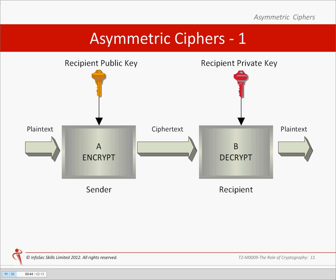The sender must possess the public key of the recipient. The recipient generates the private and public key pair and makes the public key available to other entities who might want to send confidential data. The sender uses the recipient's public key with the encryption algorithm to produce cipher text. This cipher text is sent to the recipient who has sole access to the private key and only the recipient can decrypt it. Anyone trying to intercept the cipher text will only have access to the recipient's public key, which will not decrypt the cipher text.